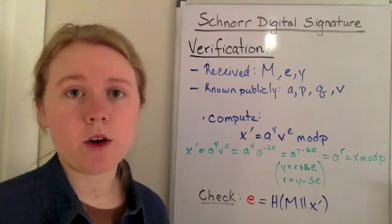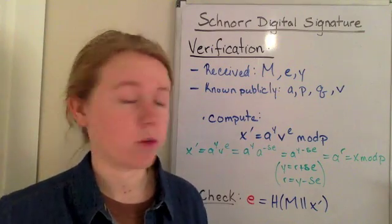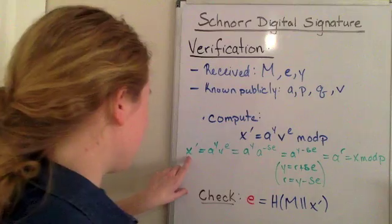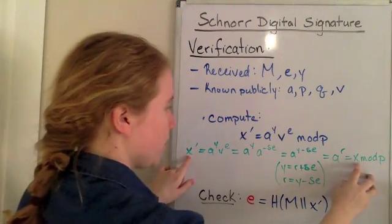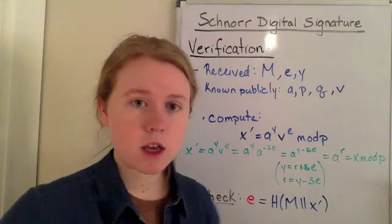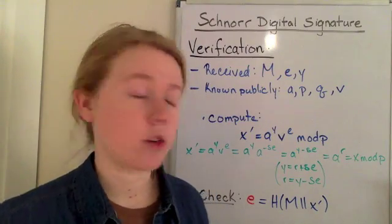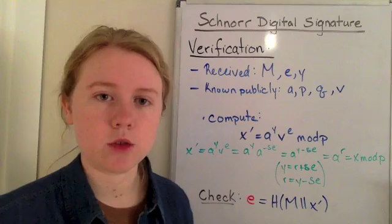And if you recall, a to the r is what we said x equals. So theoretically, our x prime should be the original x computed by the sender, if it is a true signature.